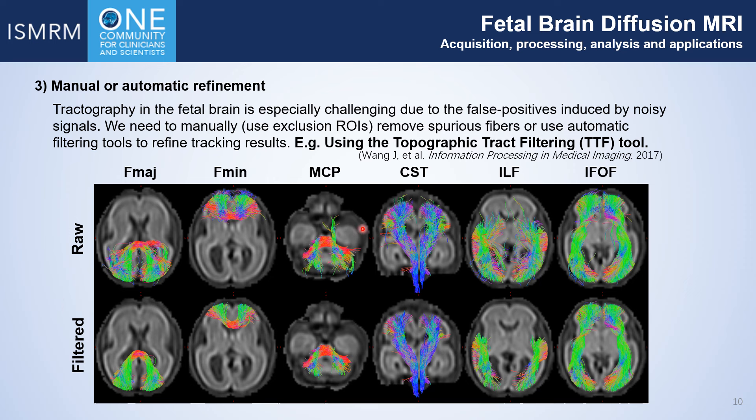These streamlines can be removed by manually placing exclusion ROIs or by using automatic tools, such as the TTF tool, which filters fiber tracks according to their topological structures.